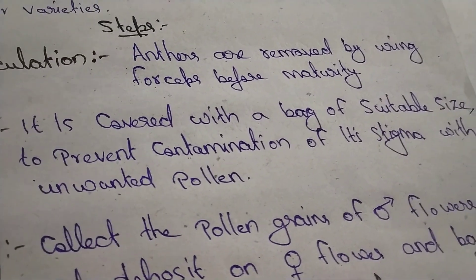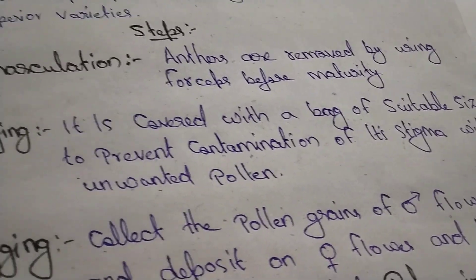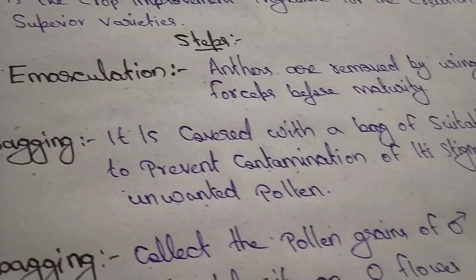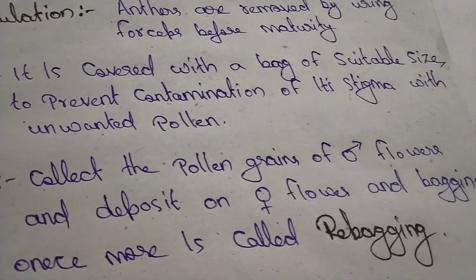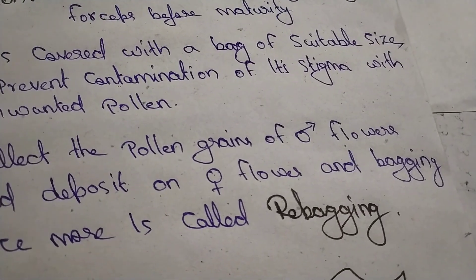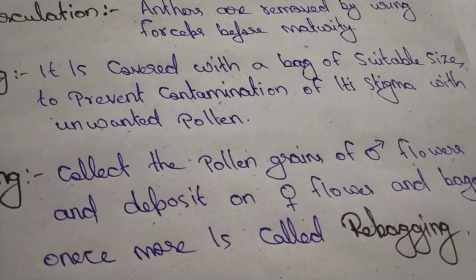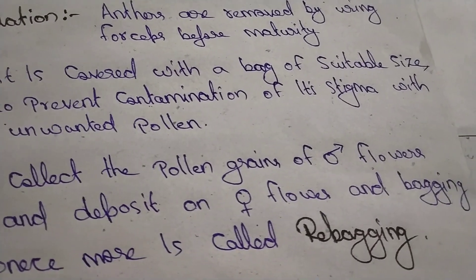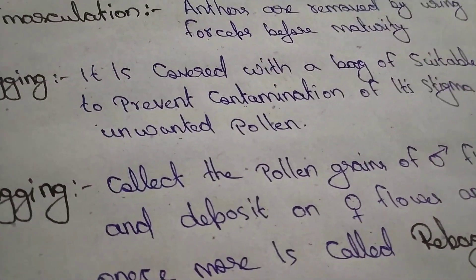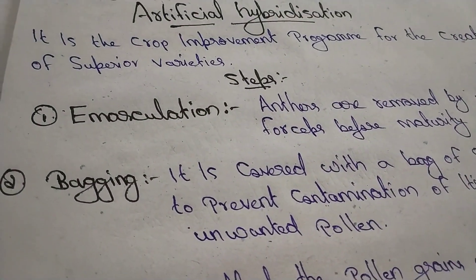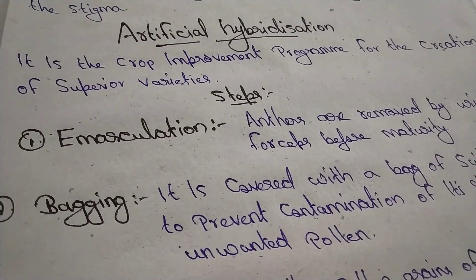Collect the pollen grains of the male flower and deposit them on the female flower. Covering the flower again with a bag is called re-bagging. The bag is then removed after the process is complete.